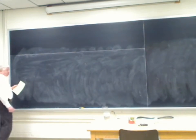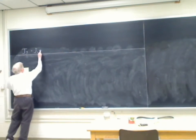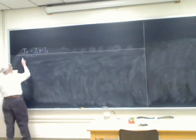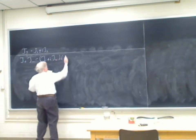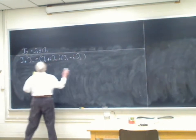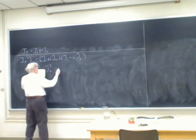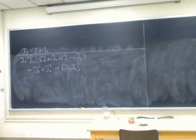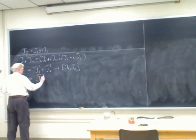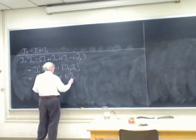In case you wonder what that square root is, just remember that J plus or minus is J₁ plus or minus iJ₂, and so J₁ plus iJ₂ squared equals J₁² plus J₂², and then minus i times the commutator of J₁J₂, which is iℏJ₃. So this equals J_total² minus J₃² plus ℏJ₃.